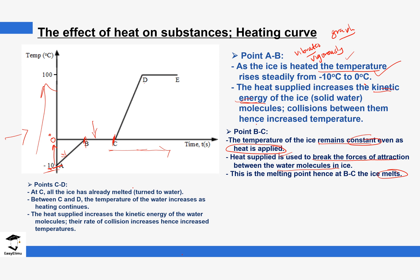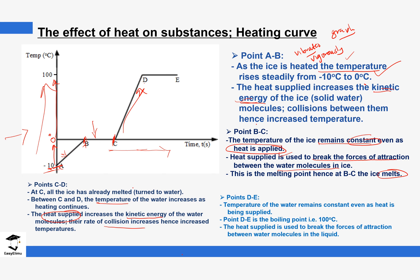Region C-D is a small repetition of region A-B. The temperature is increasing from zero to one hundred degrees Celsius. When the temperature increases, kinetic energy also increases. As we are supplying heat into the system and the energy increases, the particles begin to move even more rapidly and collide with each other more frequently. The collisions increase and the movement is more vigorous, similar to what happened in region A-B.